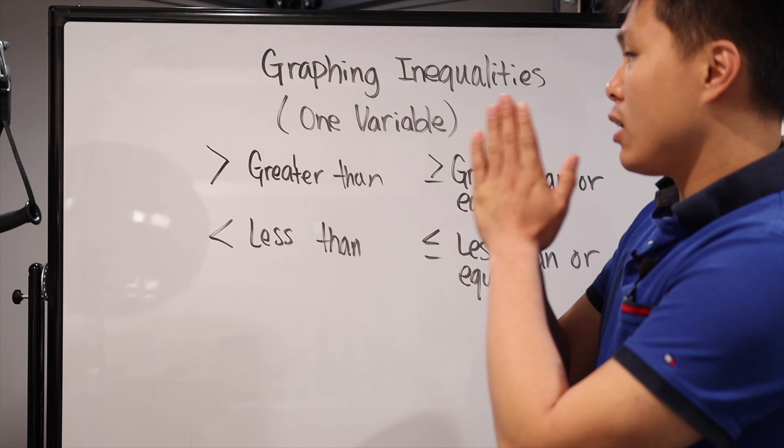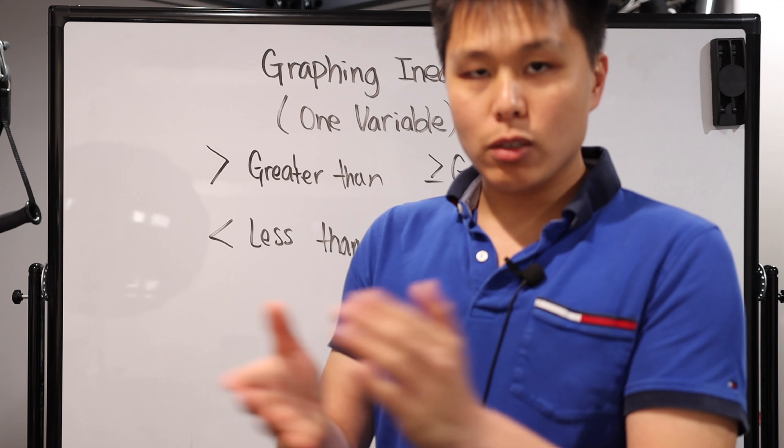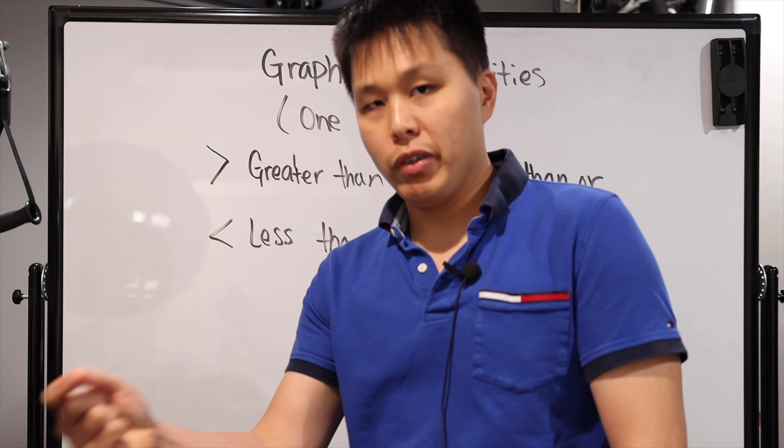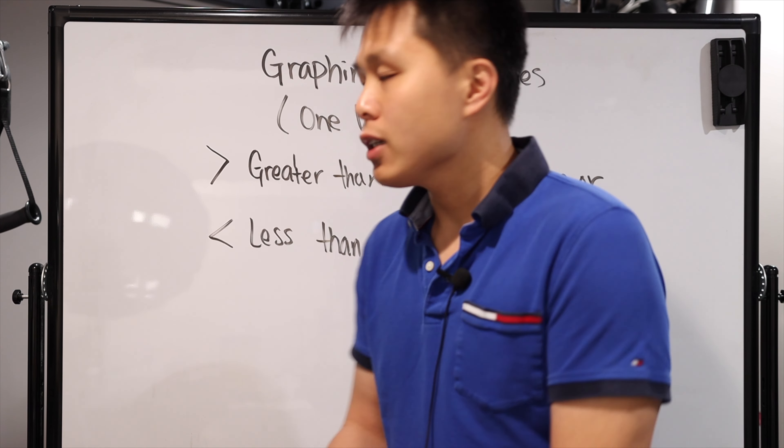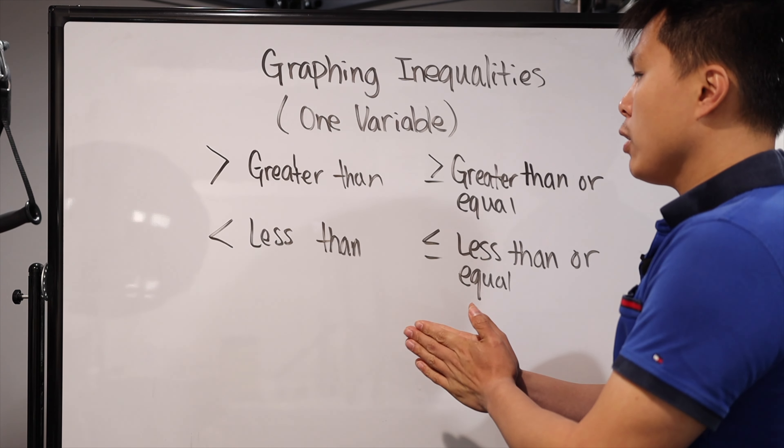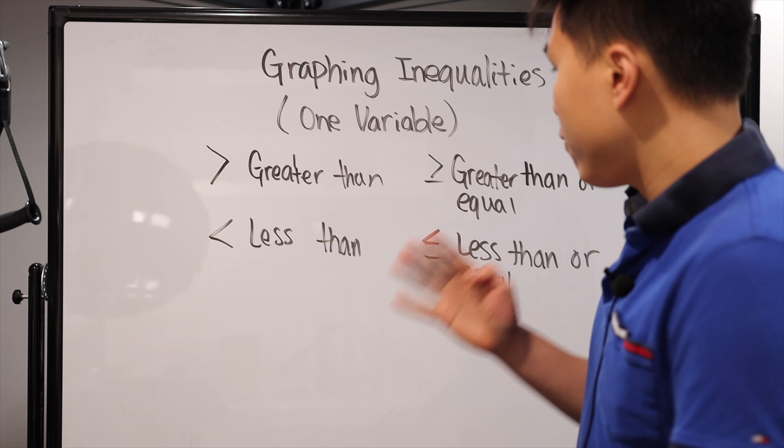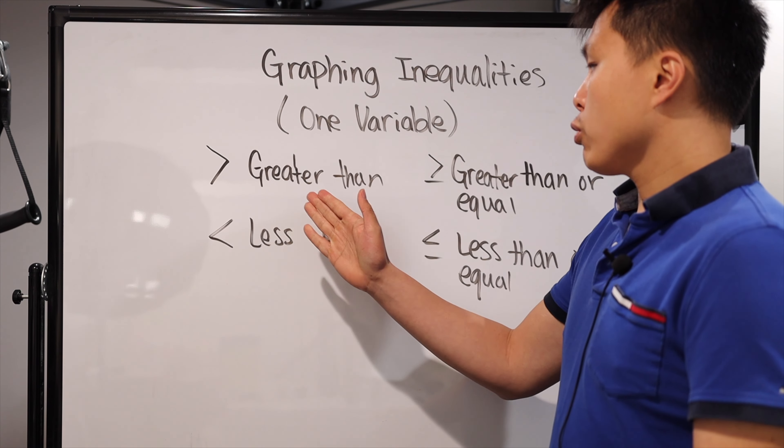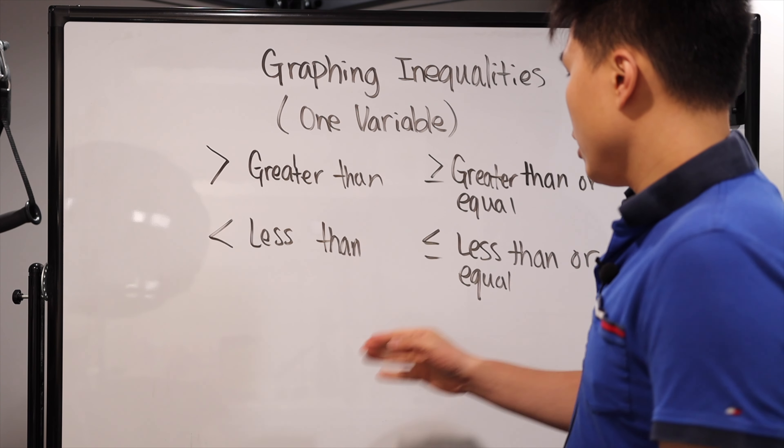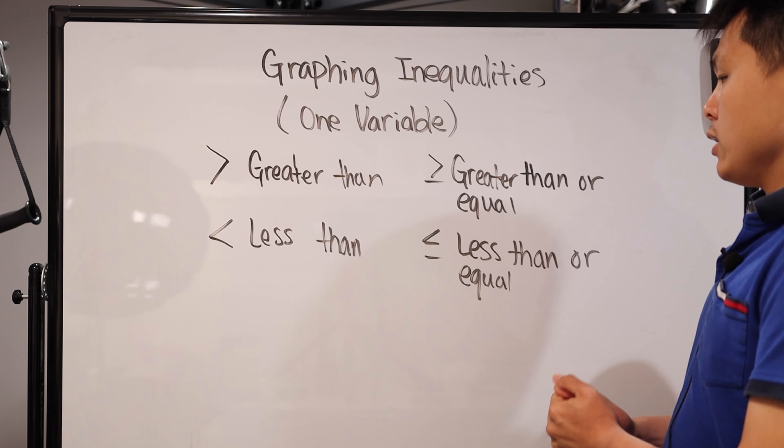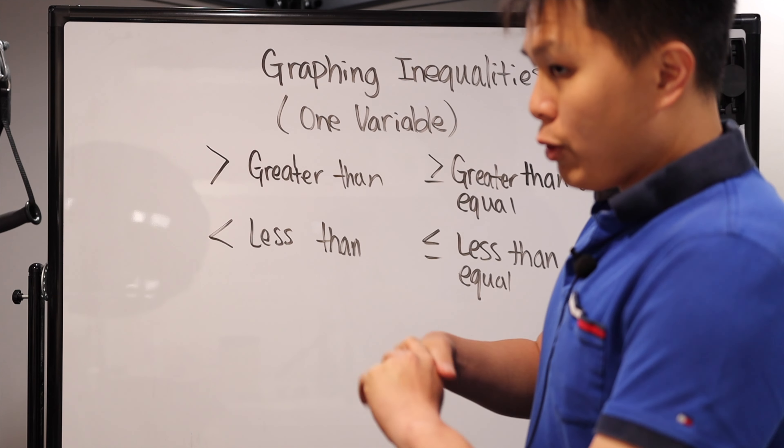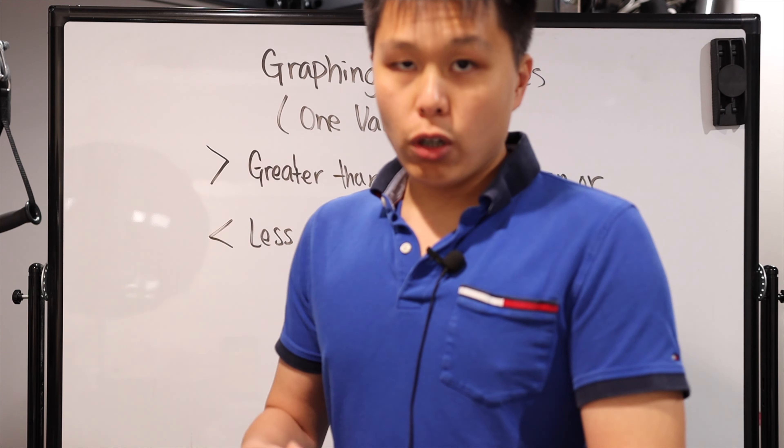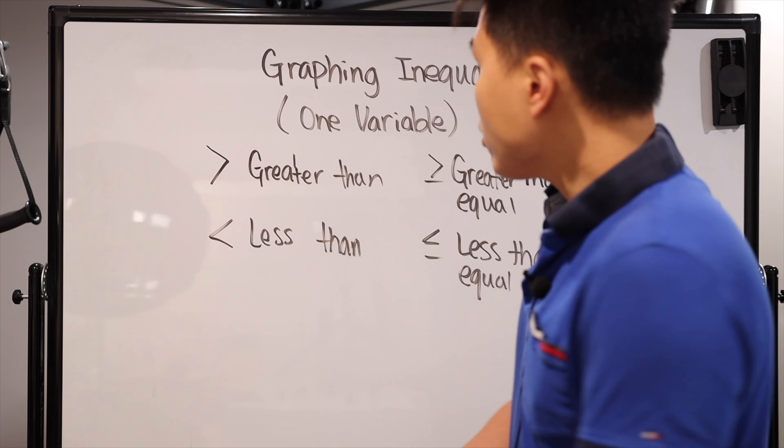All right, so graphing inequalities of one variable. There are instances where you're gonna be graphing with two variables, I'll have another video on that, which is slightly different, but we're just focusing on one variable. Now remember, inequalities have four different variations: your greater than, your less than, your greater than or equal, less than or equal. If you want to know more about it or how to solve those kind of problems, there is definitely a video on that, so check that out.